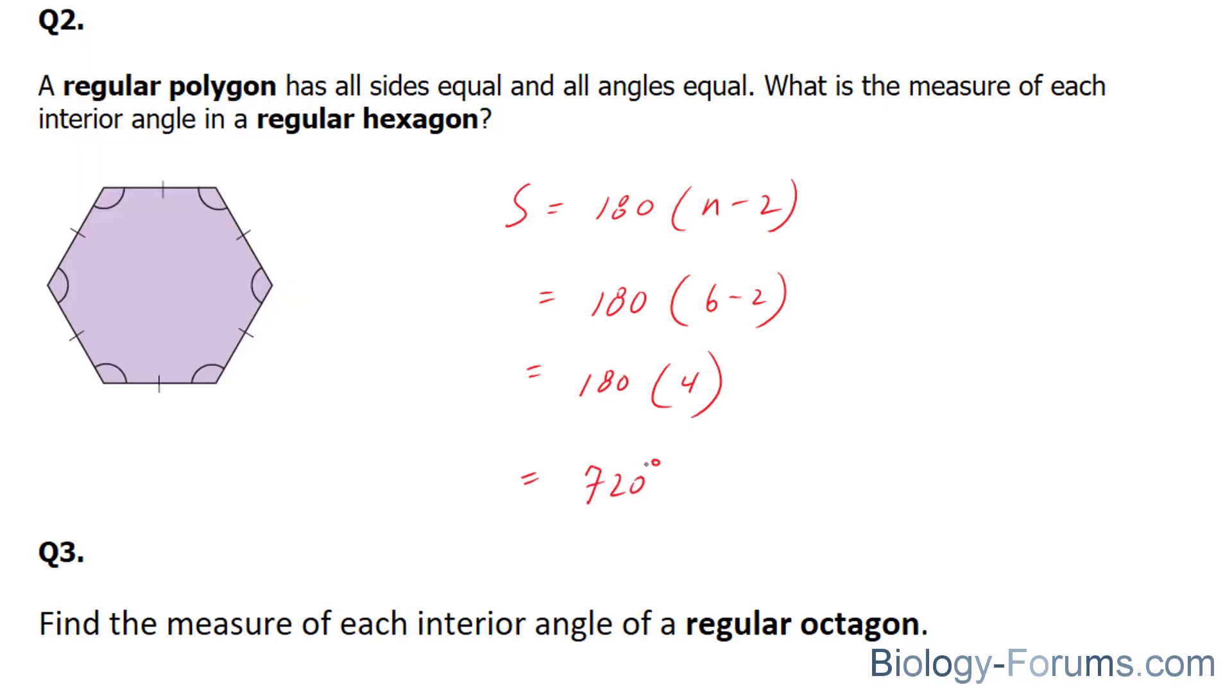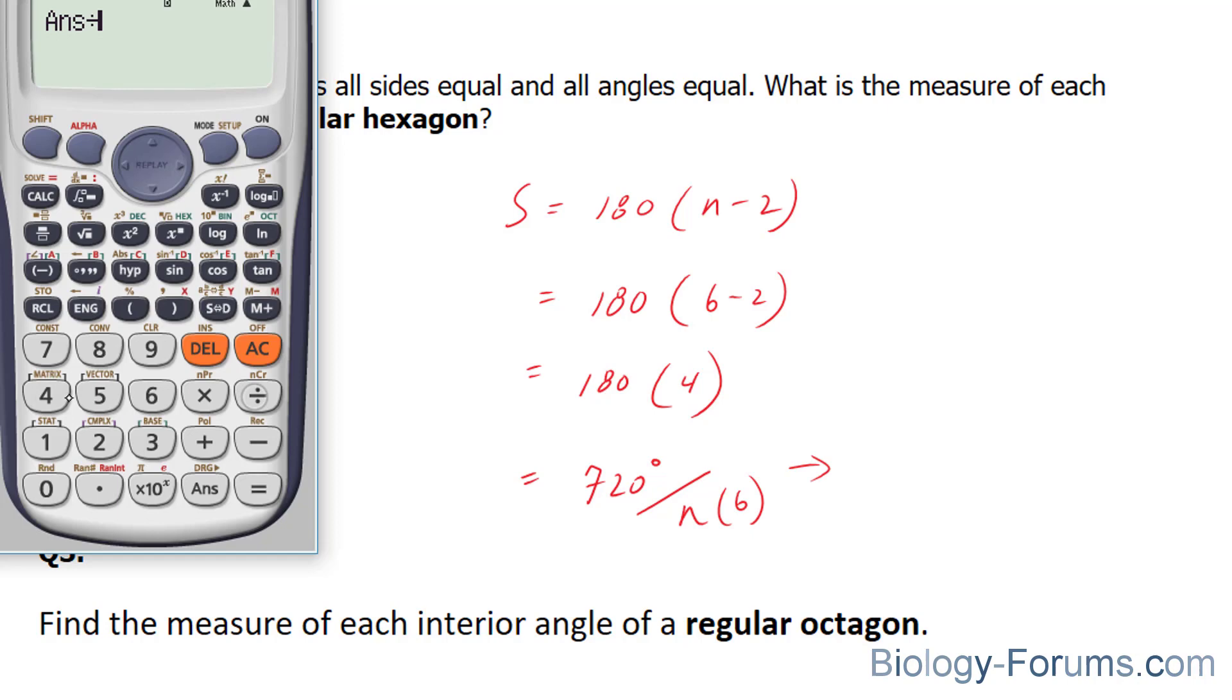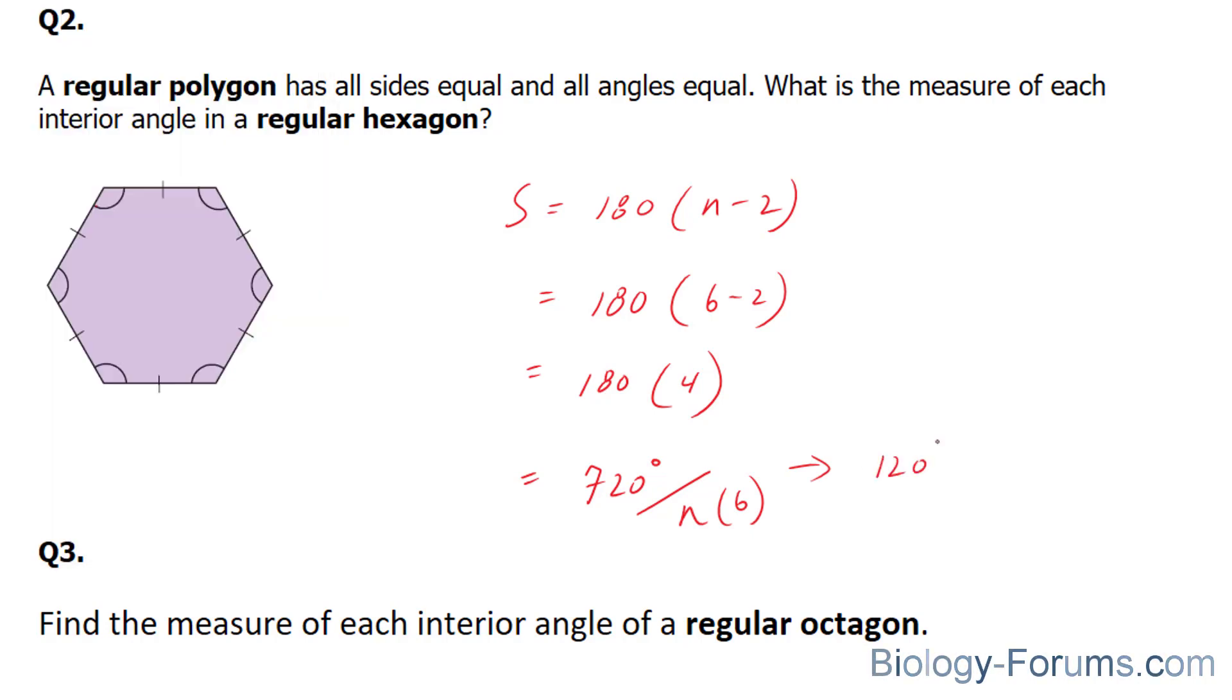Now remember, the question is asking what the measure of each interior angle of this regular hexagon is. So what we need to do is find each individual angle. And the way we do that is we take our number and divide it by the number of sides, which is equal to 6. So if we do that, we end up with 120 degrees.